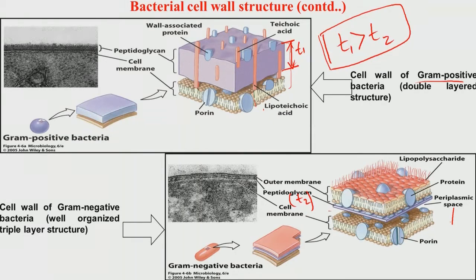Gram-negative bacteria like E. coli represent a very characteristic three-layer structure, with the peptidoglycan layer sandwiched between a top layer and a bottom layer. There are also several transmembrane proteins visible in the gram-negative bacteria. In this way, the bacterial wall in gram-negative bacteria is much thicker overall and quite different from that of gram-positive bacteria.